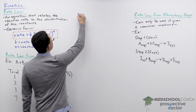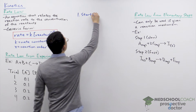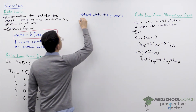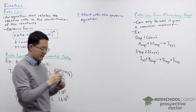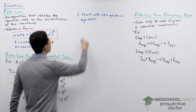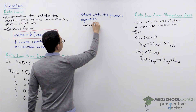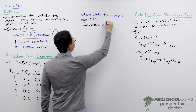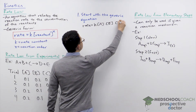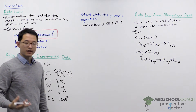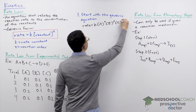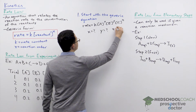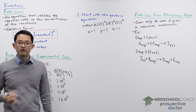The first step is to start with the generic equation. That means we always write: rate equals the rate constant K times the concentration of reactants A, B, and C each raised to an exponent. We need to figure out the exponents — let's call them X, Y, and Z — to determine the rate law for this reaction.